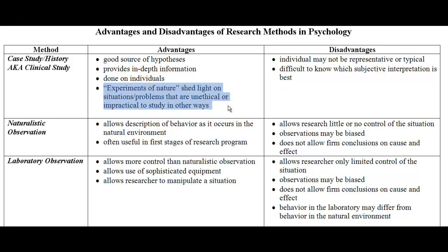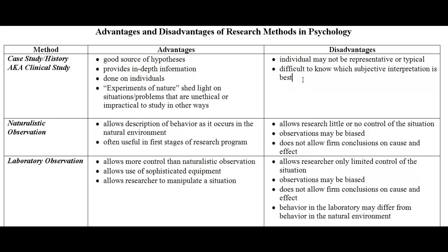Probably the most famous example of a case study is Jeannie, the girl who was found in the early 1970s at the age of 13, who was not able to speak and basically grunted and spat her way through her first experiences with people. Disadvantages: the individual may not be representative or typical, and it's difficult to know which interpretation is best. There's a lot of background information we just don't know — we don't know what Jeannie was like before she was found at age 13.